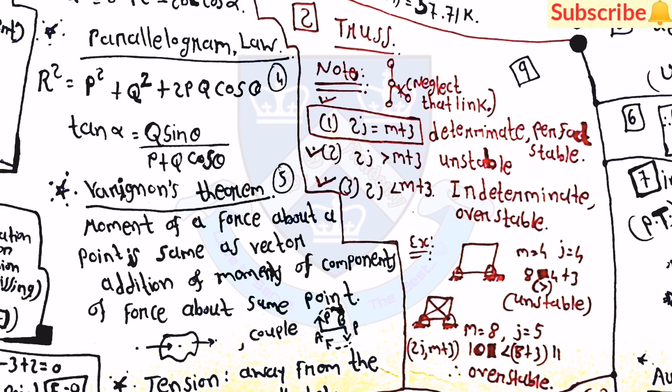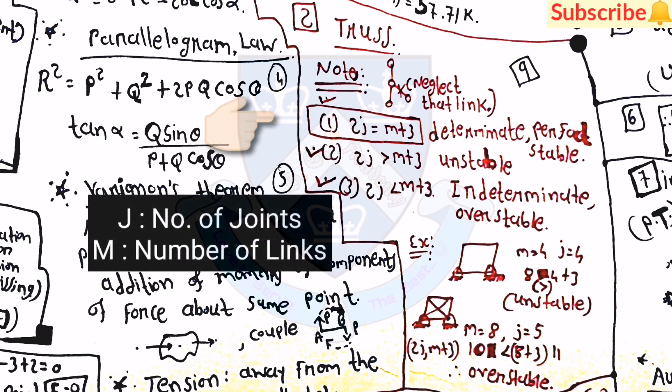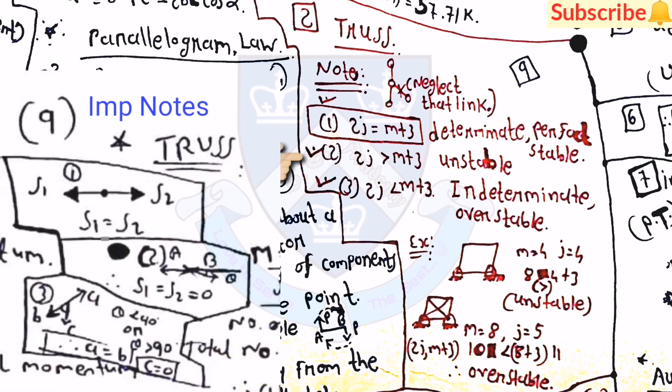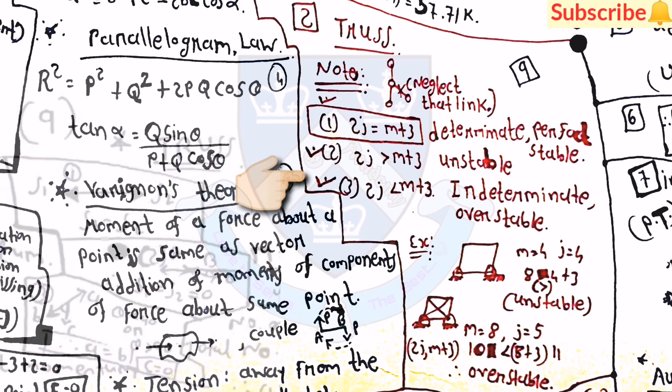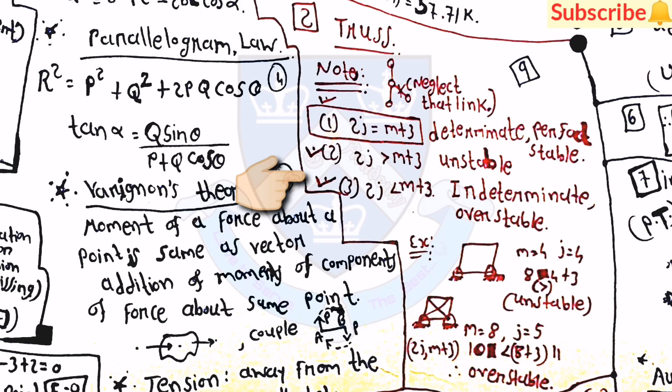Then after, the important concept from the engineering mechanics which is truss. If 2j is equal to m plus 3, then the determinate or perfect or stable structure is there. Then if 2j is greater than m plus 3, then unstable structure is there. And if 2j less than m plus 3, then indeterminate or over-stable structure is there. Here j is equal to the number of joints and m is equal to number of links. So there are two examples for the structure. Here in the first one, m is equal to 4 and j is equal to 4. Then by equation, value of 2j is greater than that of m plus 3, so the structure is unstable. And in the second one, m is equal to 8 and j is equal to 5, so here the stable structure is there.